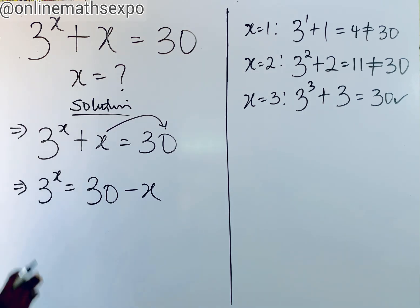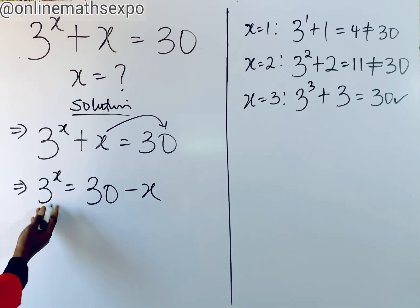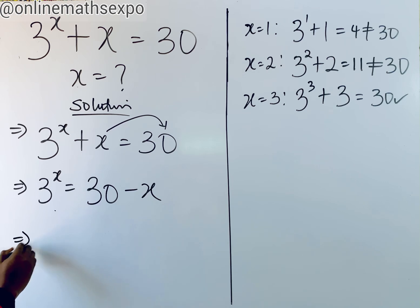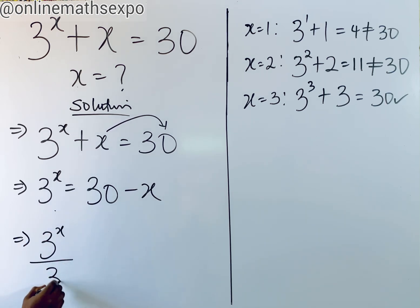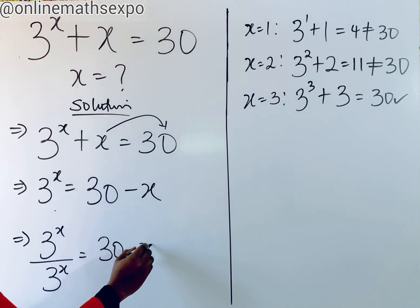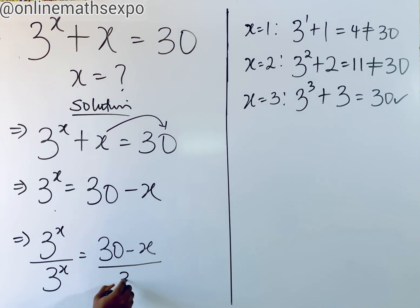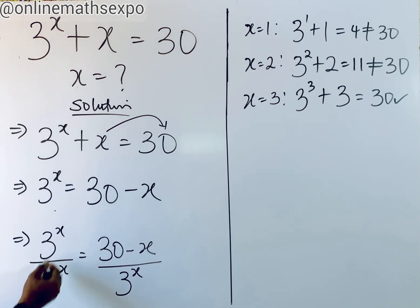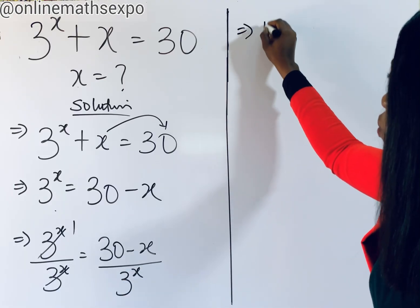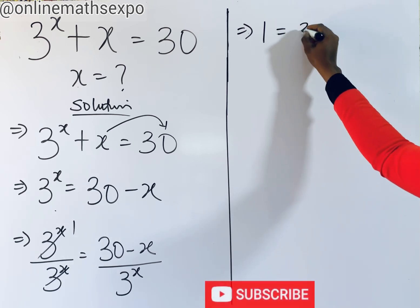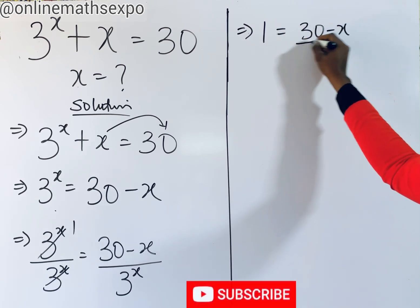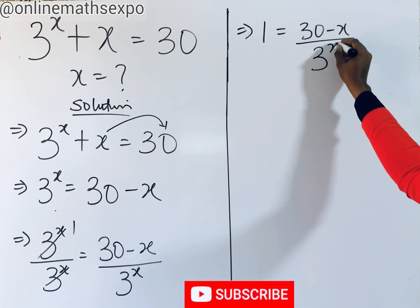What we do next is divide both sides by 3 to the power of x. So we have 3 to the power of x divided by 3 to the power of x, equal to 30 minus x divided by 3 to the power of x. When a number divides itself, it gives us 1. So we have 1 is equal to 30 minus x divided by 3 to the power of x.